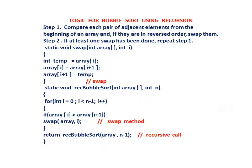Static void swap(int array, int i): int temp equals array[i]; array[i] equals array[i+1]; array[i+1] equals temp. Static void recBubbleSort(int array, int n): for int i equals 0, i less than n minus 1, i plus plus — if array[i] greater than array[i+1], swap(array, i). Return recBubbleSort(array, n minus 1).